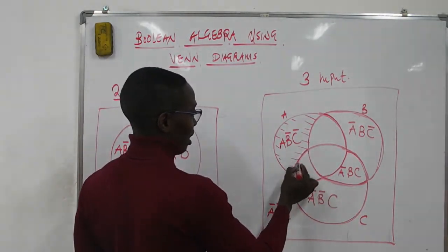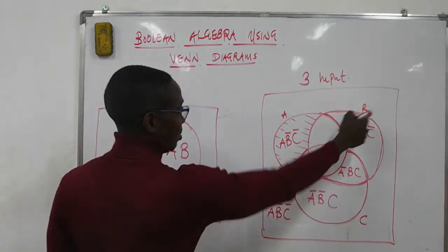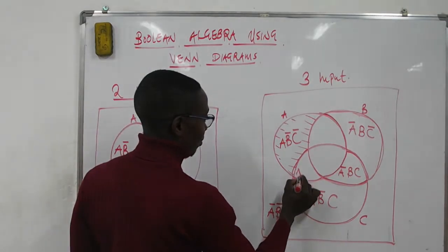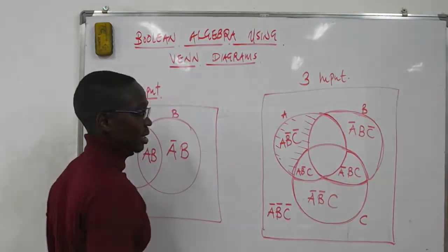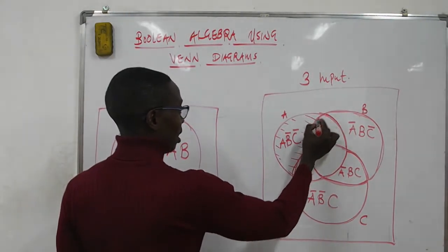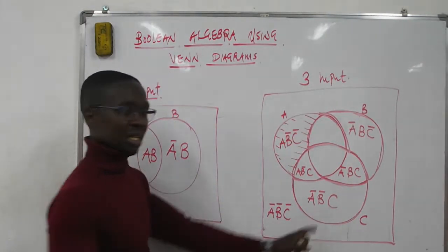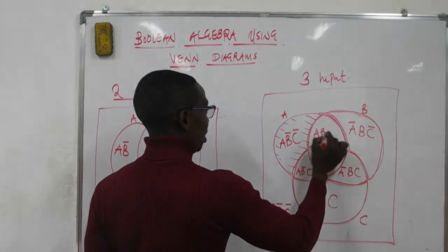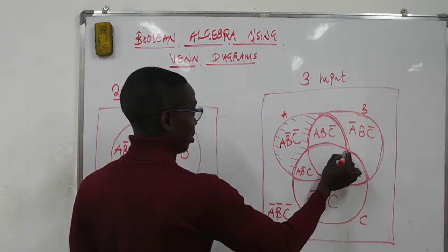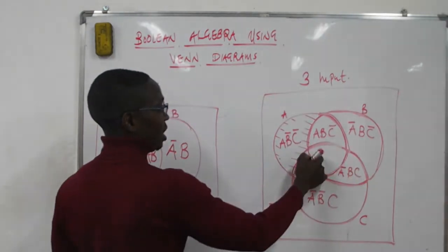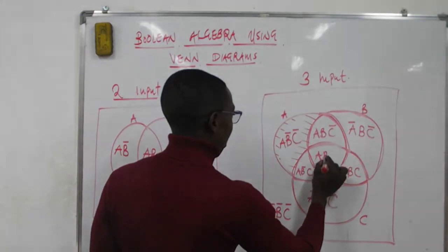In this region here, A appears and C appears but B doesn't appear, so you have A, B bar, C. Then you have this little section where A appears, B appears, and C appears. So this region is called A, B, C.